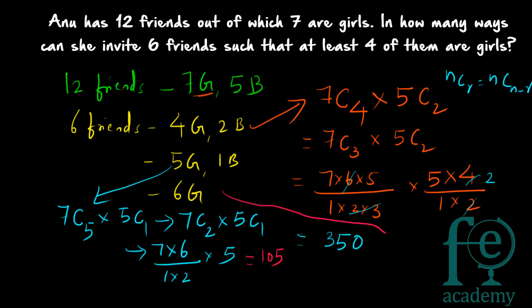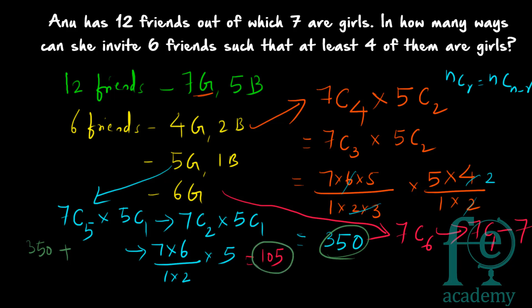Case 3: 6 girls, 0 boys. Select 6 from 7 girls: 7C6 = 7C1 = 7. Total number of ways = 350 + 105 + 7 = 462. So there are 462 ways in which Anu can invite her 6 friends such that at least 4 of them are girls. Thank you for watching.